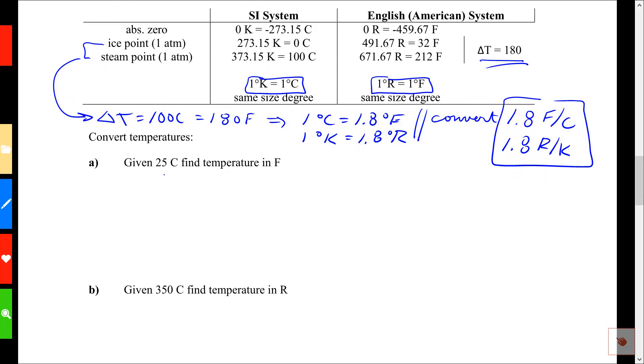Given a temperature of 25°C, let's find the temperature in Fahrenheit. I'll take 25°C, I'm going to multiply by a conversion factor, 1.8 Fahrenheit per C. Now the C's cancel, and when I crunch those numbers, I get 45. Now I'm going to call that Fahrenheit, but I'm going to put it in parentheses, because this is really a change of temperature of 45 degrees above the ice point.